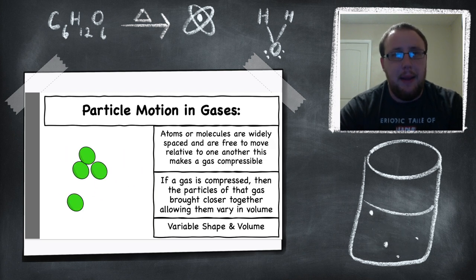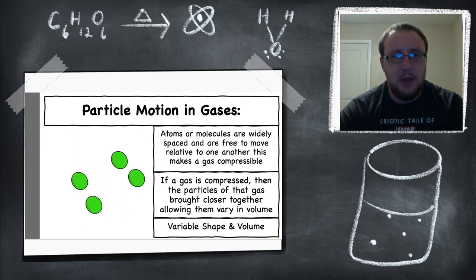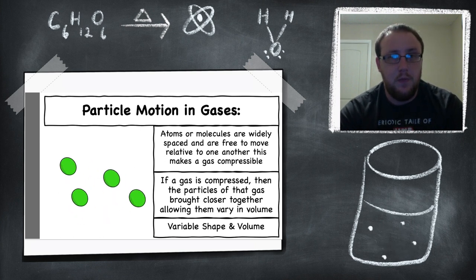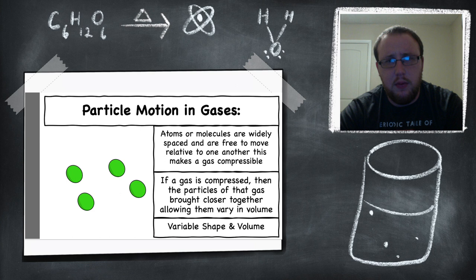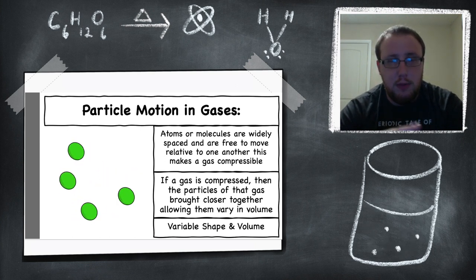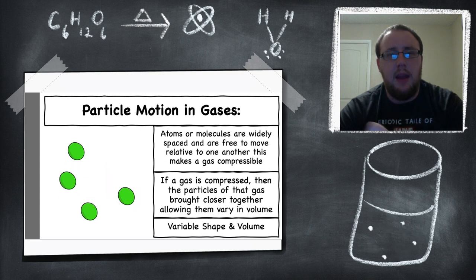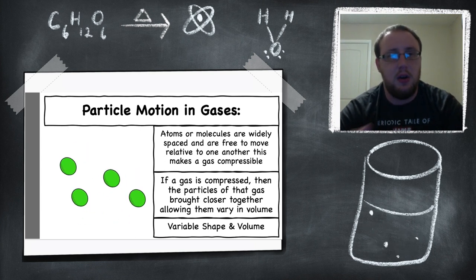The final state of matter is gases, and particle motion in gases is pretty easy. Atoms or molecules are widely spaced out in gases and they're free-moving relative to each other. This is what makes a gas compressible. If you have a balloon filled with air and you squeeze it, it changes the shape and you feel the pressure — the air molecules go to either end of your hand. The littler the space, the more those molecules move closer together, creating more pressure. Because gas molecules are really not bound together and are free-moving, this gives them a variable shape and a variable volume, as we've seen with balloon animals.